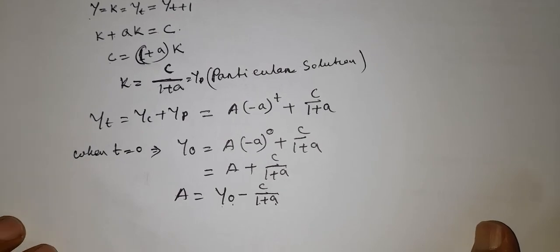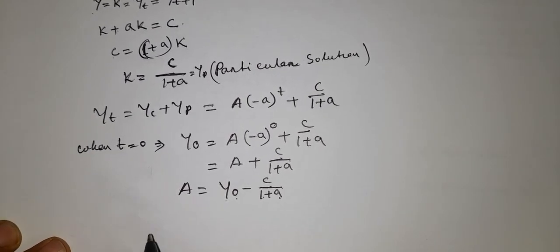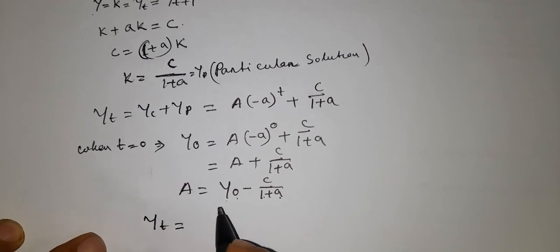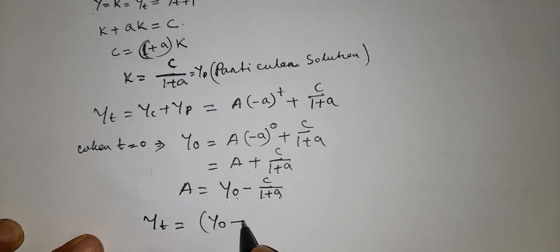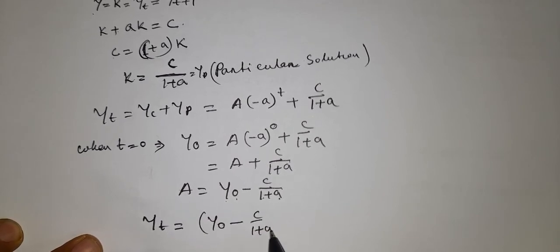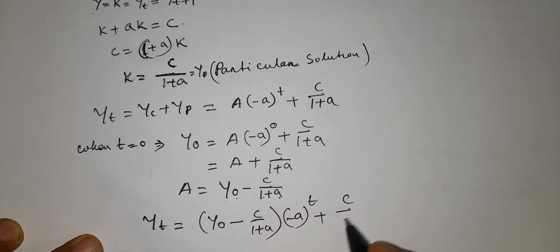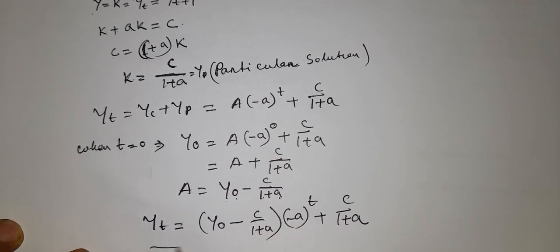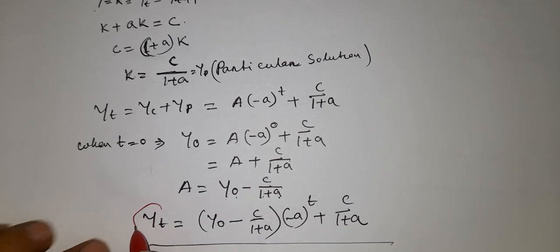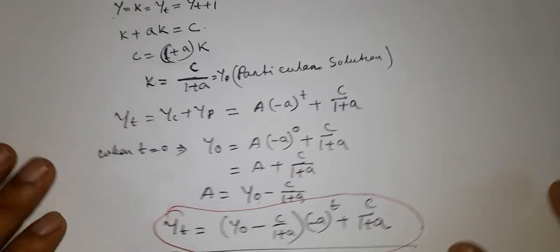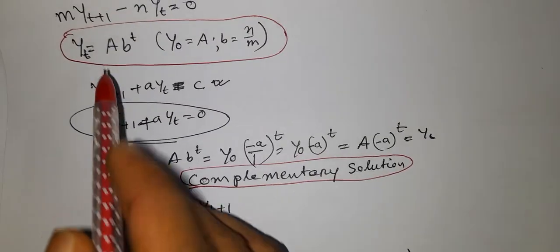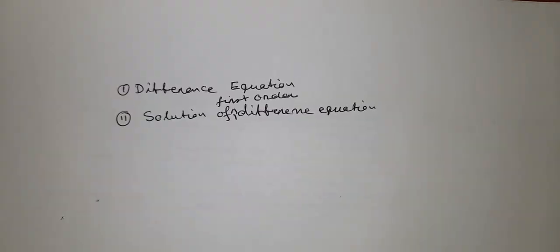The complete or final solution of this difference equation is y_t = [y_0 - c/(1+a)] · (-a)^t + c/(1+a). In this video, we have learned about difference equations and the solution of first order difference equations. Thank you.